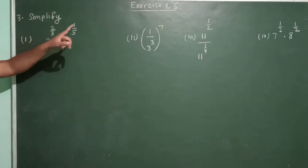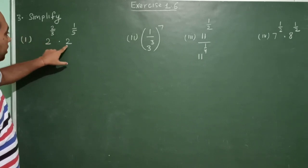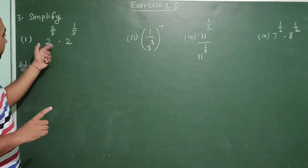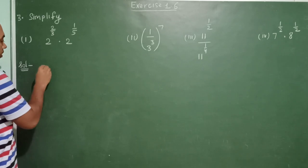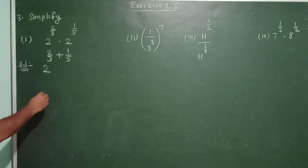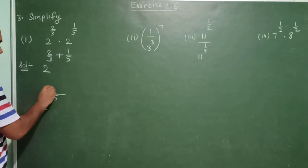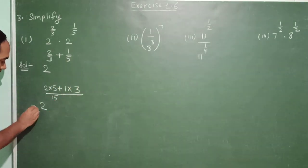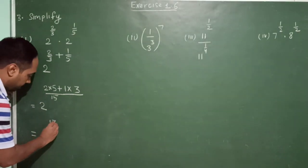Question number 3 of Exercise 1.6: Simplify. The first expression is 2 raised to the power 2 upon 3 multiplied by 2 raised to the power 1 upon 5. By the laws of exponents, when bases are the same, powers add. So this gives 2 raised to the power (2 upon 3 plus 1 upon 5). Taking LCM of 3 and 5, which is 15: 2×5 = 10 and 1×3 = 3, so 10 plus 3 is 13. The answer is 2 raised to the power 13 upon 15.